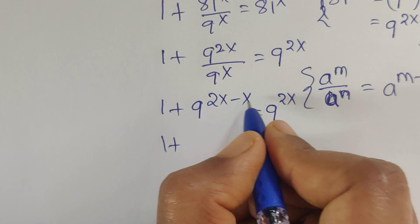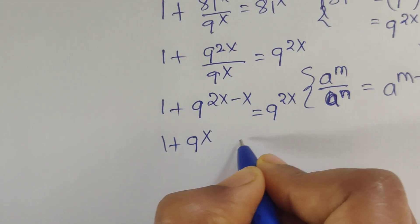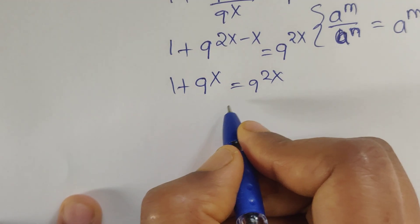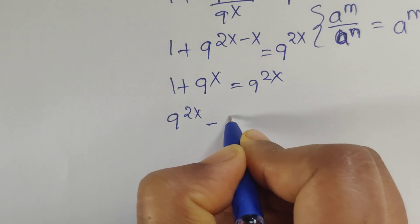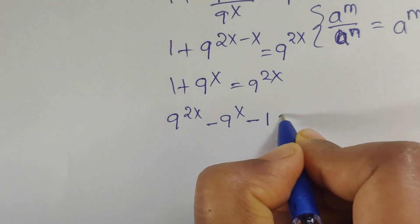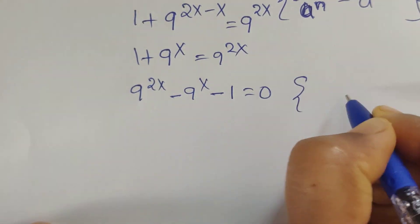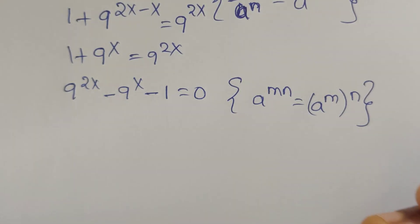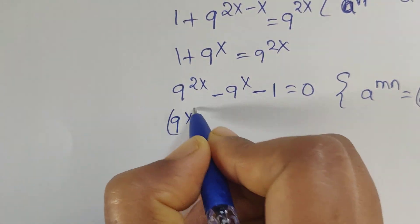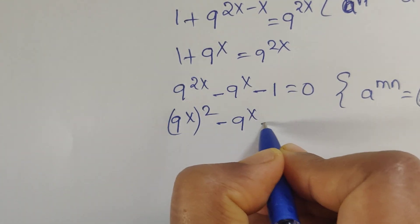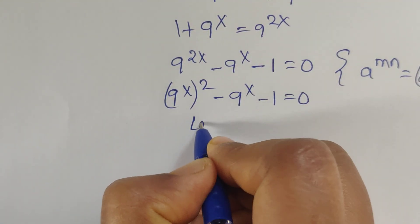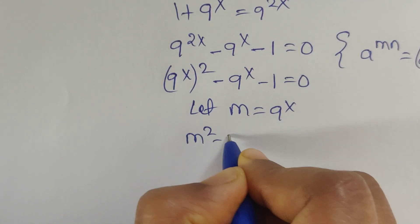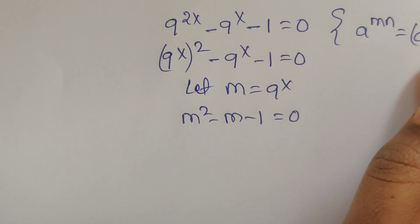So 1 plus 9 to the power of 2x minus x, which is 9 to the power of x, equal to 9 to the power of 2x. Now move this term to the right side: 9 to the power of 2x minus 9 to the power of x minus 1 equal to 0. Applying the formula a to the power of m times n equal to a to the power of m whole to the power of n, we write this as 9 to the power of x whole squared minus 9 to the power of x minus 1 equal to 0. Let m equal to 9 to the power of x, so it becomes m squared minus m minus 1 equal to 0. This is a quadratic equation.